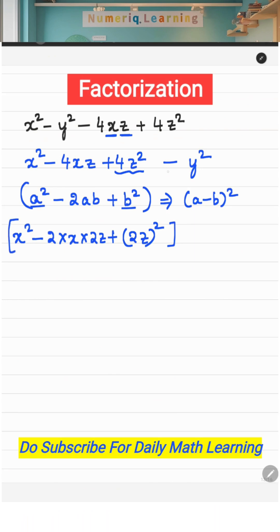Putting it in square brackets with the remaining minus y squared, you can write this in the form of a minus b the whole square — that is x minus 2z the whole square minus y squared.